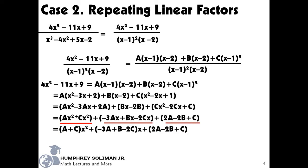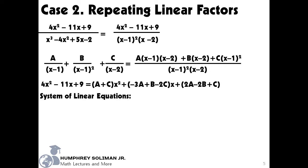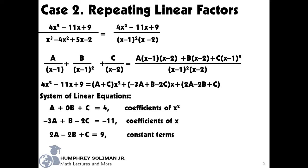We can now get a system of linear equations from here. We will get our first equation by equating the coefficients of x² from both sides. You can see that I included a plus zero B here, so that we will not miss it later on in our use of Casio ClassWiz calculator. Next, we will equate the coefficients of x to get our second equation, and the constant terms to get our third equation.